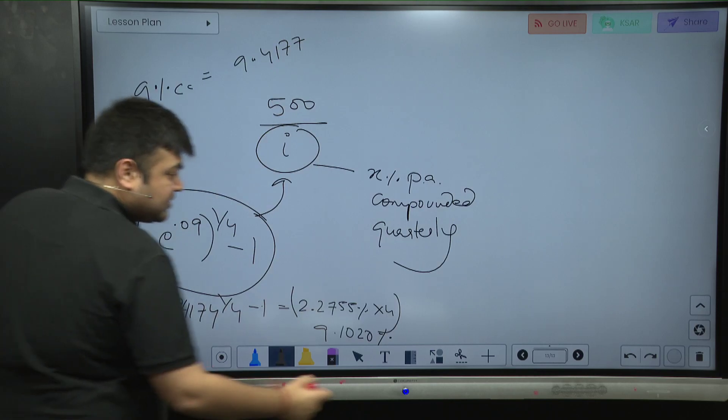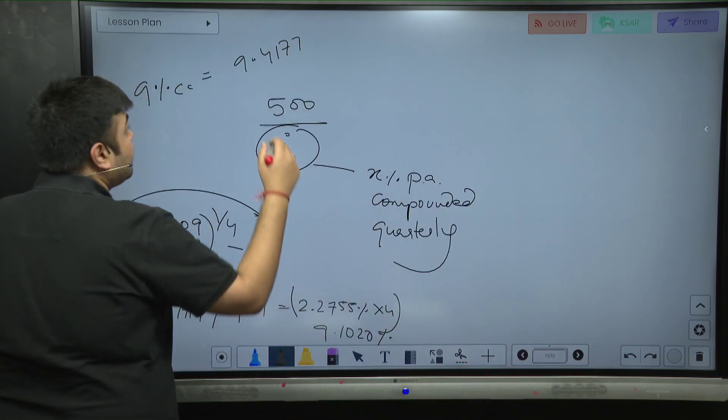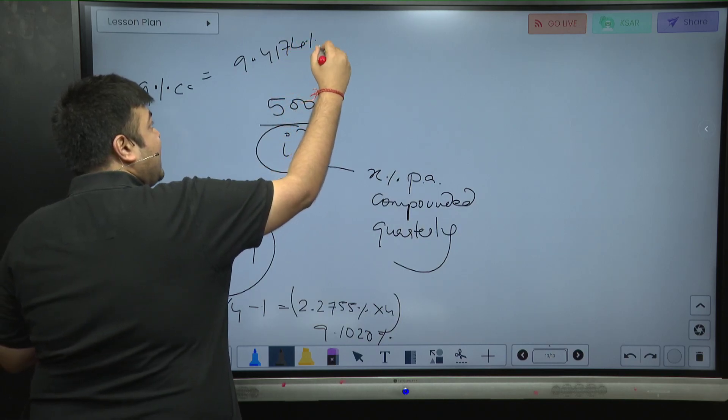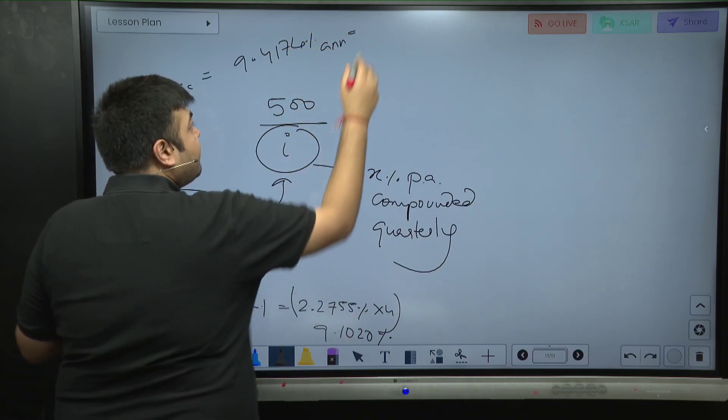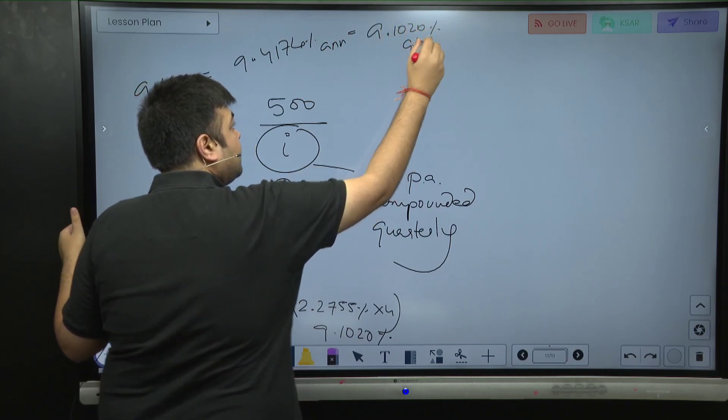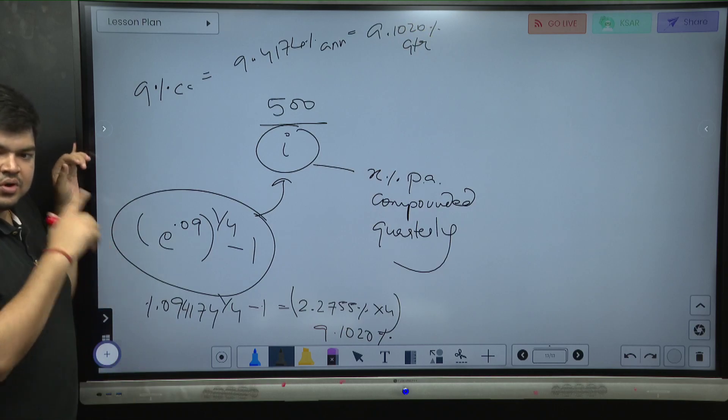9.417174 percent annual is equal to 9.1020 quarterly. They're all equivalent rates. All these rates are equal.